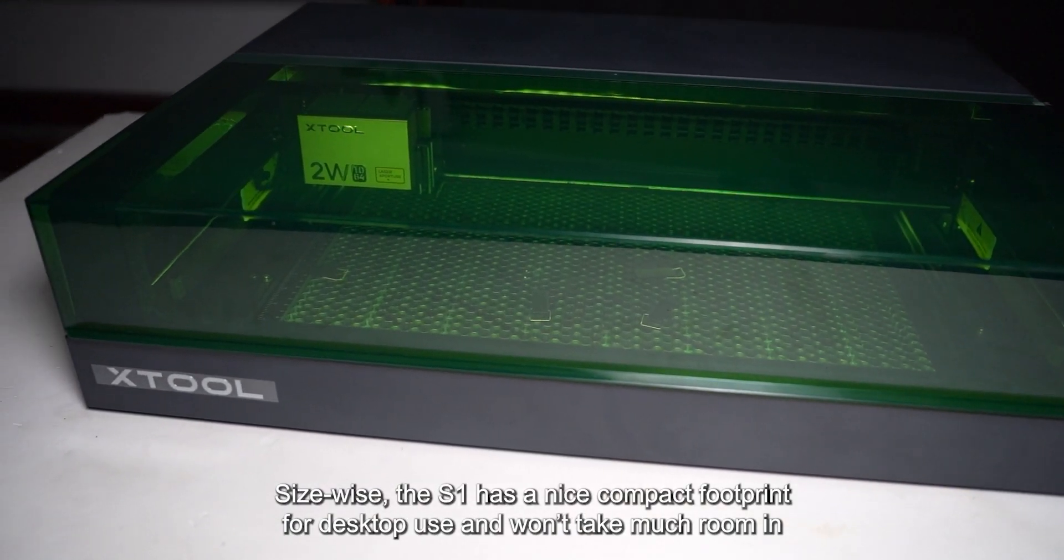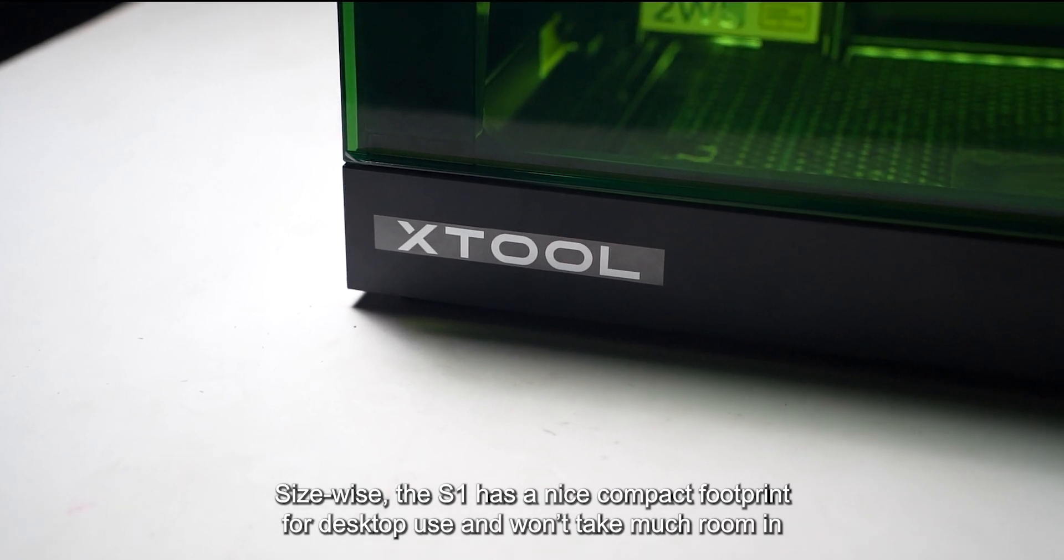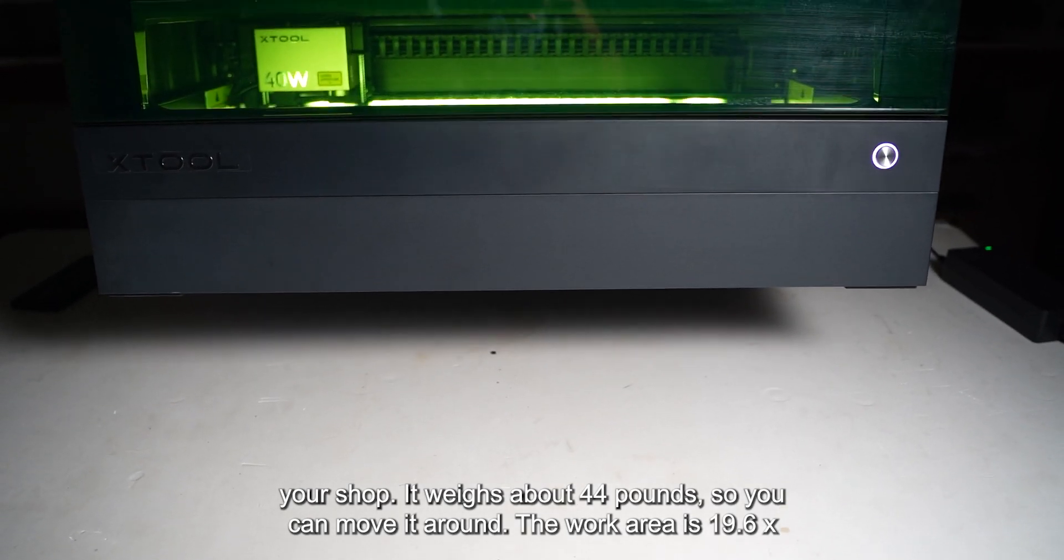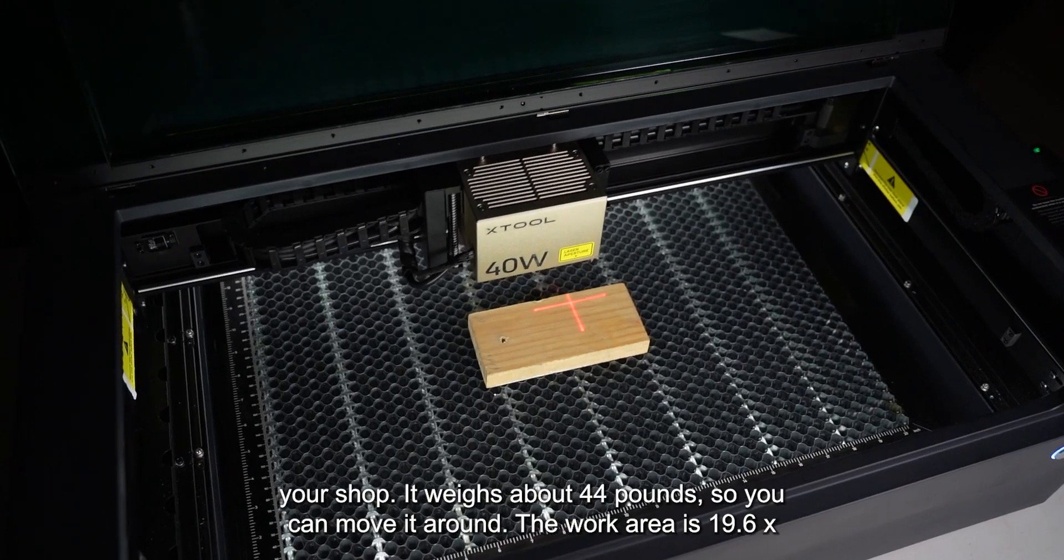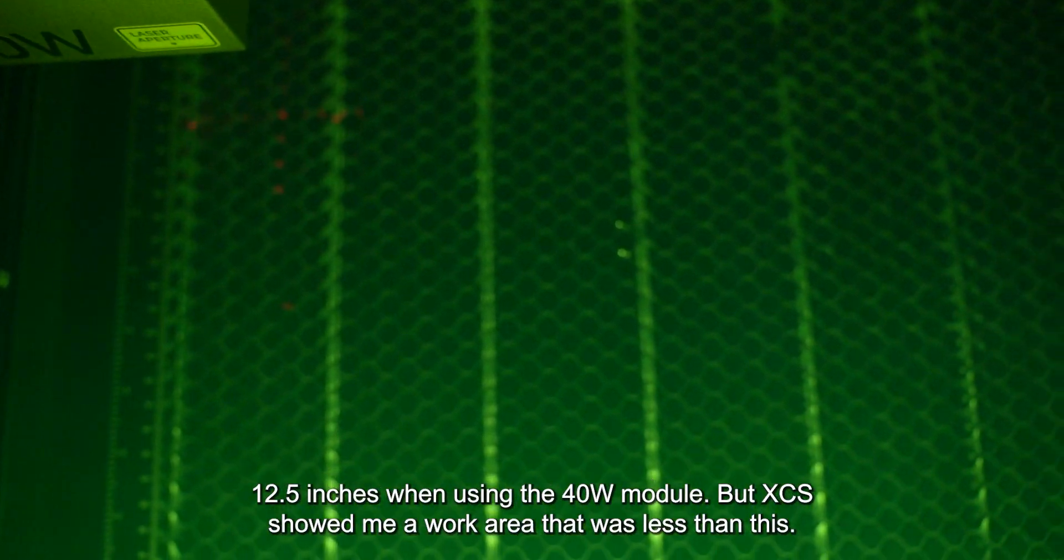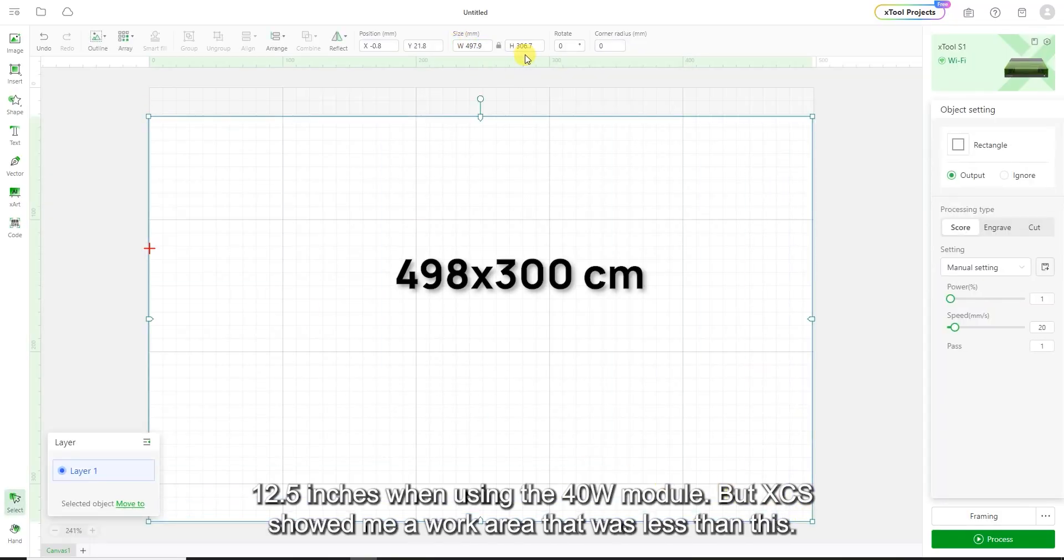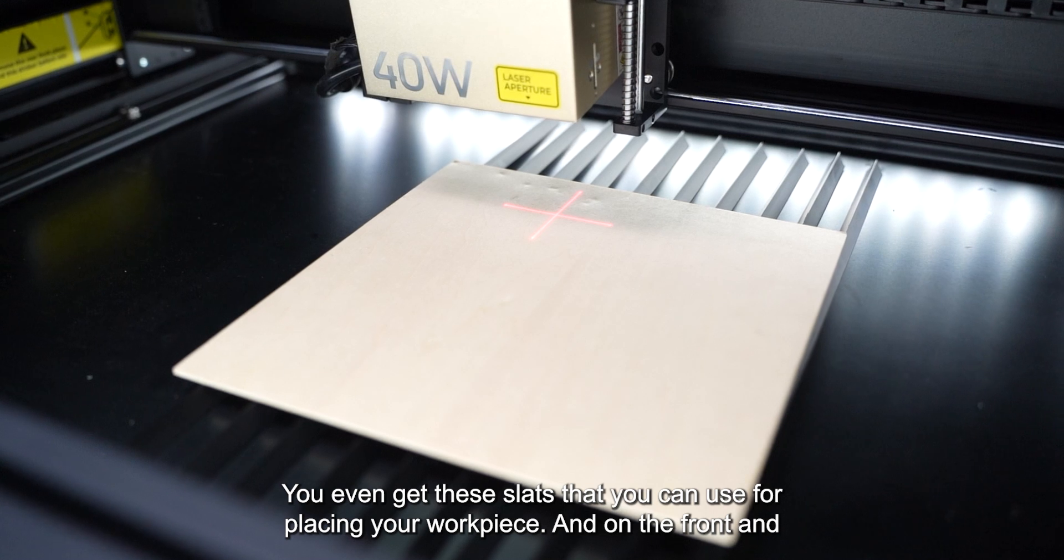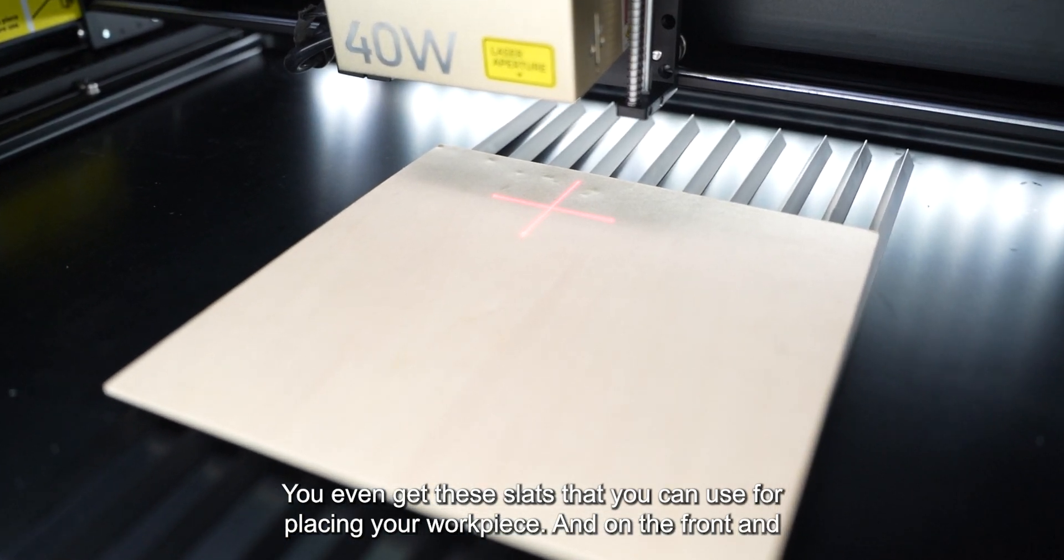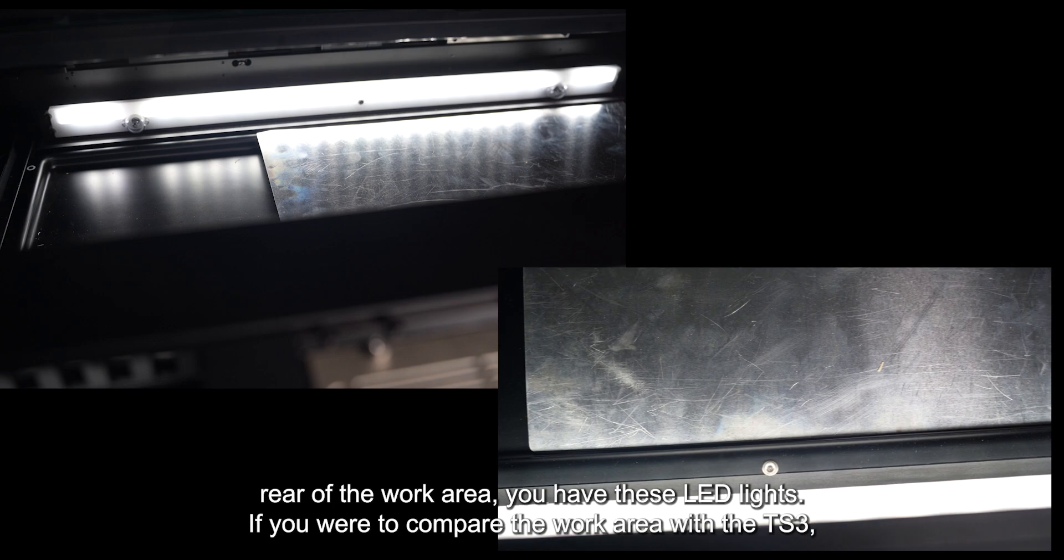Size wise, the S1 has a nice compact footprint for desktop use and won't take much room in your shop. It weighs around 44 pounds so you can move it around. The work area is 19.6 by 12 and a half inches when using the 40 watt module, but XCS showed me a work area that was less than this. You even get these slats that you can use for placing your work piece and on the front and rear of the work area you have these LED lights.